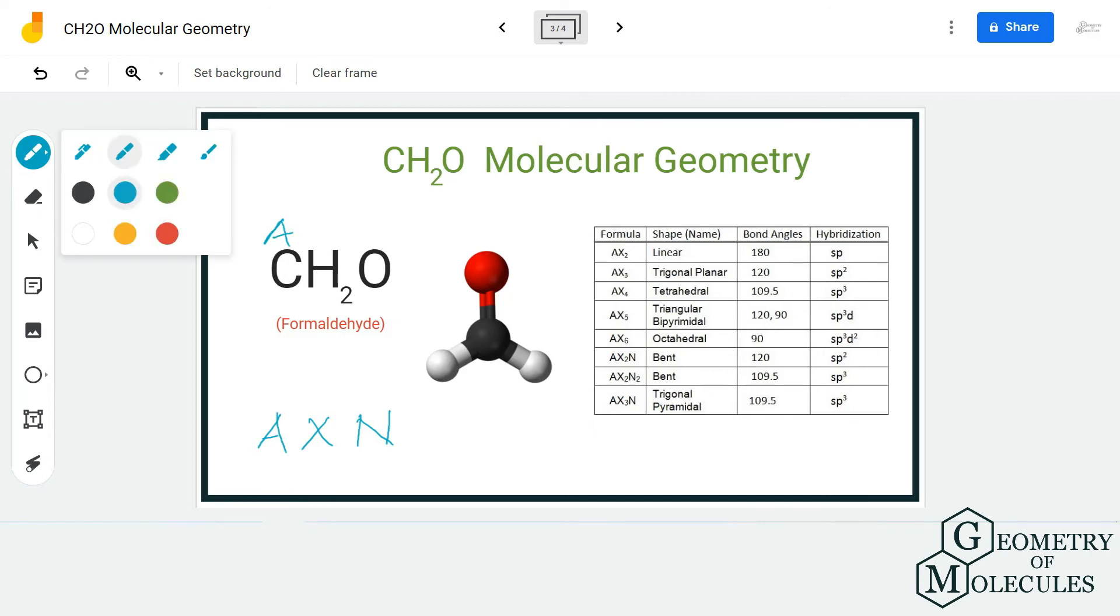And n is the number of lone pairs on the central atom. So here we have one central atom, and there are three atoms that are forming bonds with carbon atom, and we have no lone pairs of electrons on carbon atom. As you can see, all the electrons on carbon are forming bonds with oxygen and hydrogen atoms.